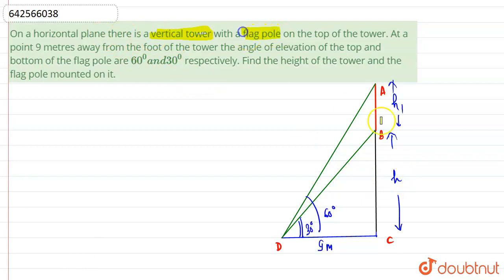So we have assumed the flagpole as AB and its height is H1 on top of a tower. At a point 9 meters away from the foot of the tower, so we have assumed that point as point D, which is 9 meters away from foot of the tower as point C.